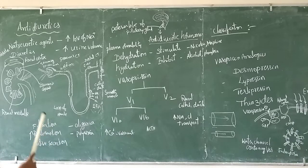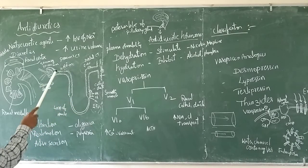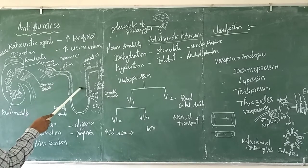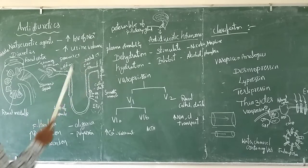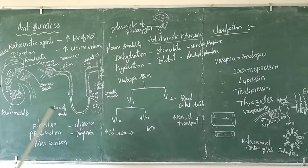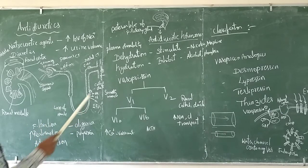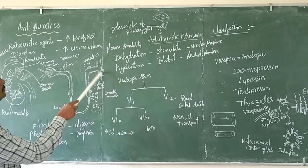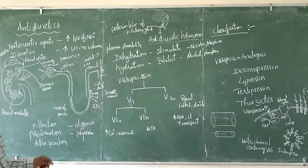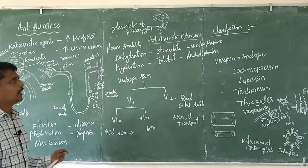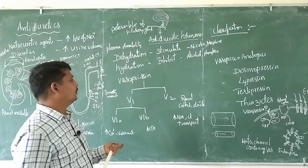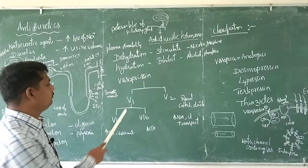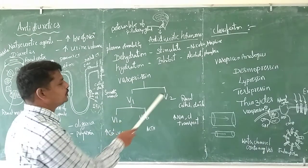Now, the nephron. The nephron has these regions: Bowman's capsule, proximal convoluted tubules, loop of Henle, distal convoluted tubules, and collecting ducts. Regarding drugs, they mostly act at the collecting ducts.